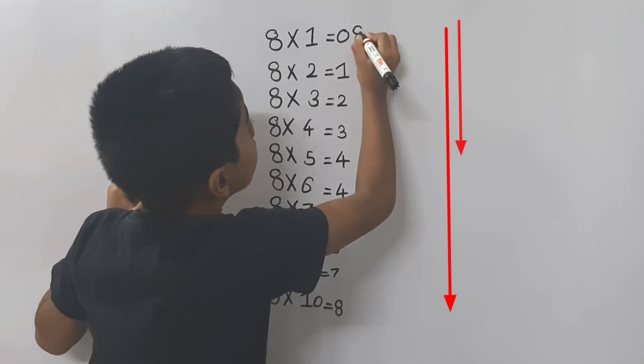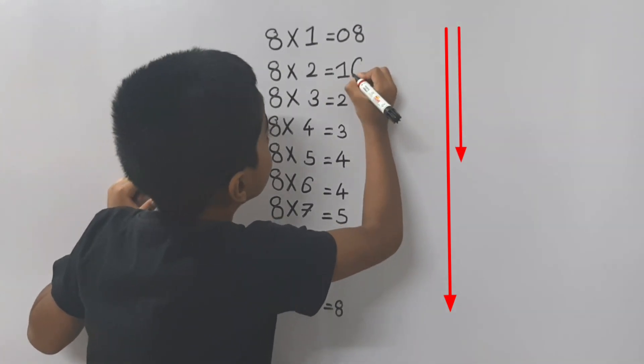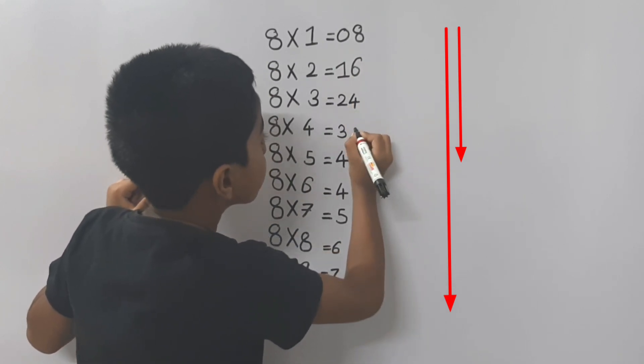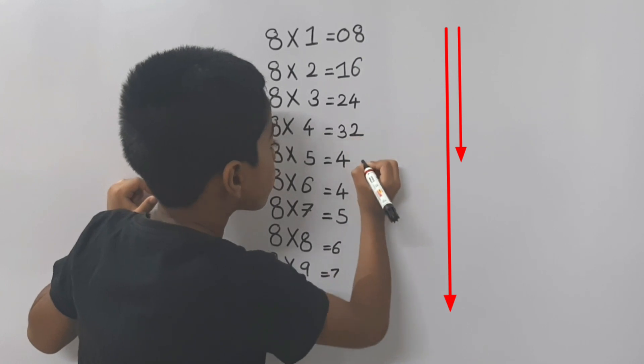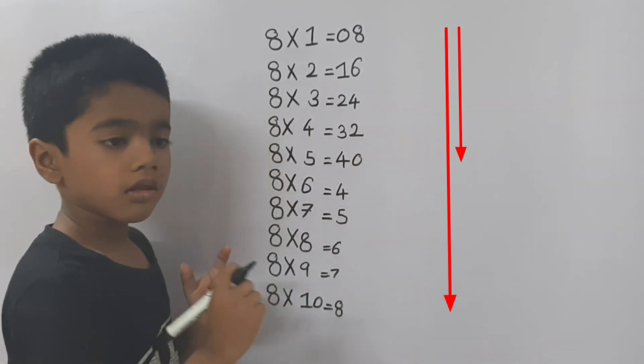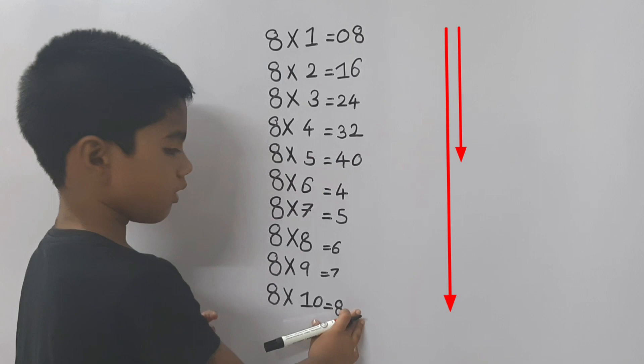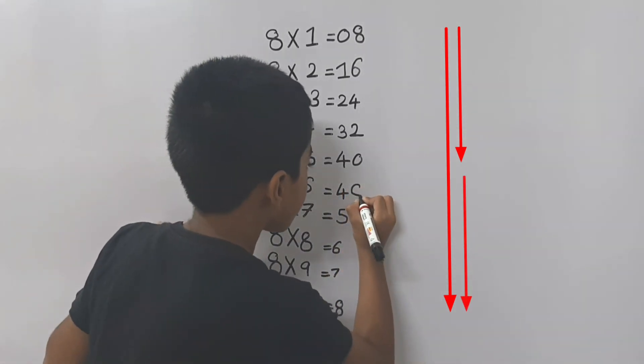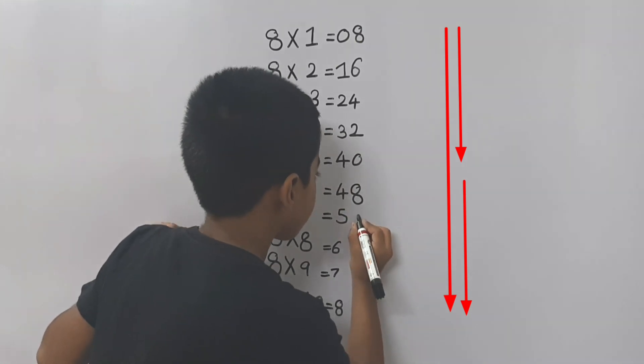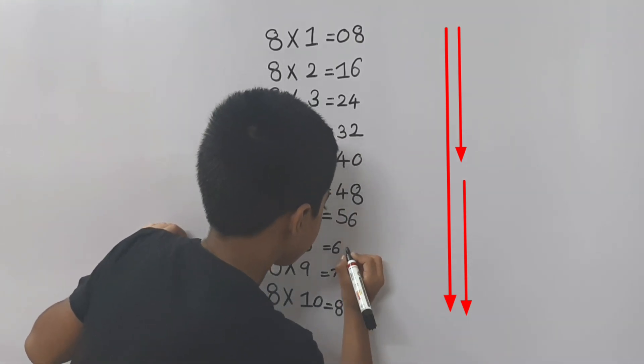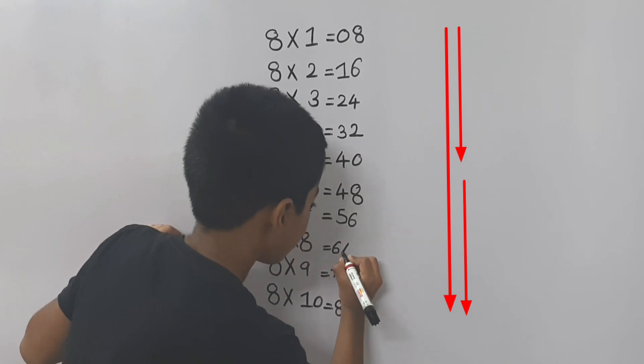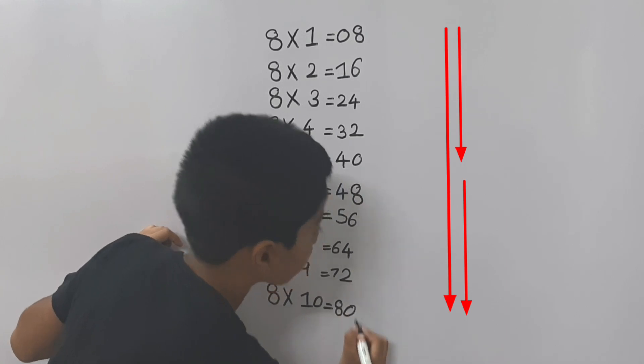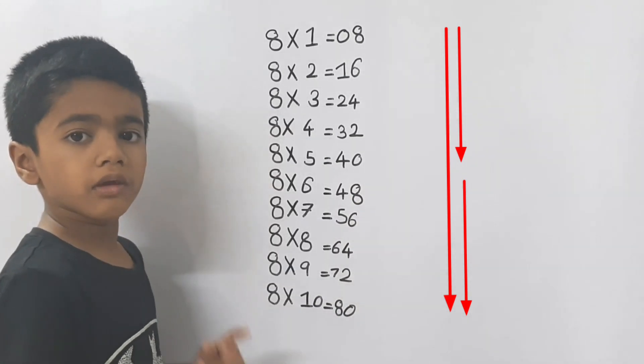8, 6, 4, 2, 0. Let's repeat it. 8, 6, 4, 2, 0. Now your table is ready.